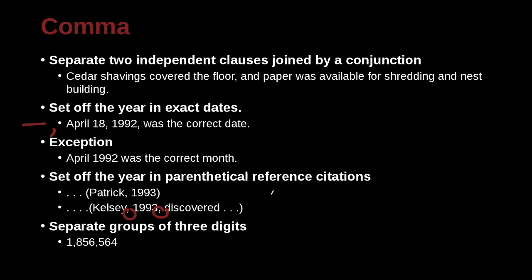We also use the comma in numbers — every three digits. This is something that often confuses Chinese students because the numbering system in Mandarin is quite different. So remember: three numbers, one comma, then three more numbers, one more comma, and so on. For thousands you have a comma, and for millions you have a comma.